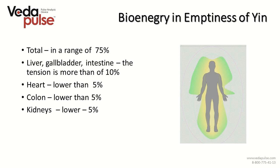In the bioenergy tab, check the total bioenergy level — it should be around 75%. There would also be a local increase of blood circulation speed and tension in organs predisposed to diseases for this constitution type: liver, gallbladder and intestine. Heart, colon and kidneys would be slightly emaciated, though in case of acute constipation there may be tension in the colon.